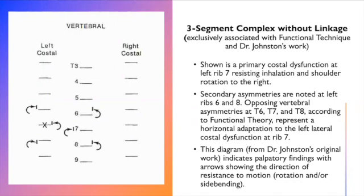The diagram indicates palpatory findings with the arrows here showing a resistance to either rotation or to side bending. They are mirrored above and below, mirrored above and below. He says that these are not linked. There's no linkage between what's going on in the vertebra and what's going on in the costal area, except as a secondary adaptation.